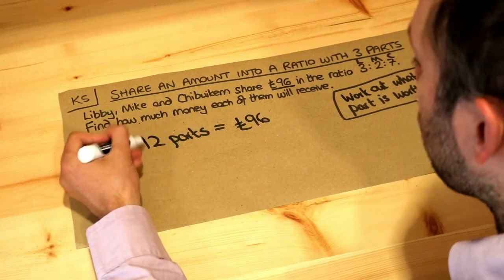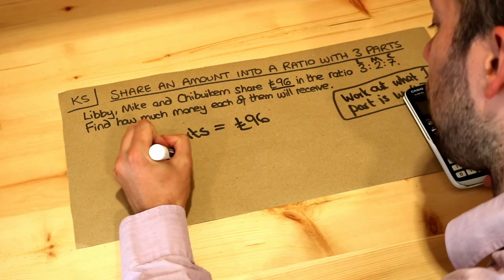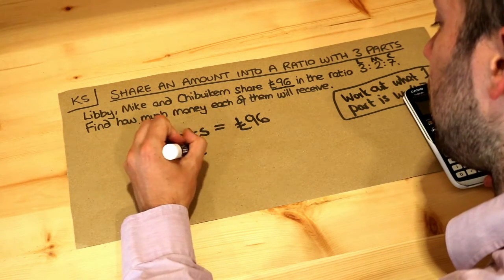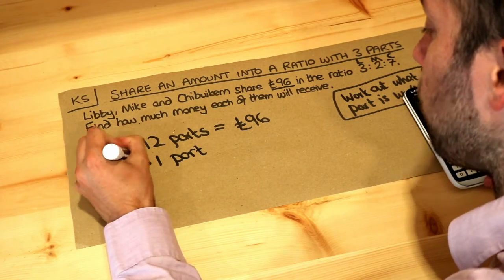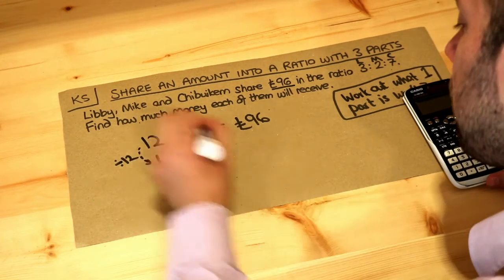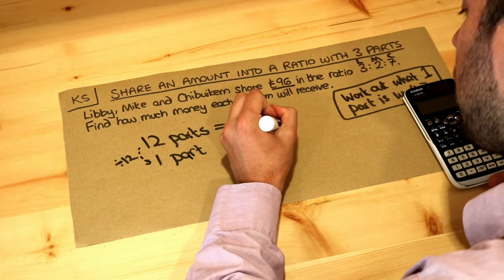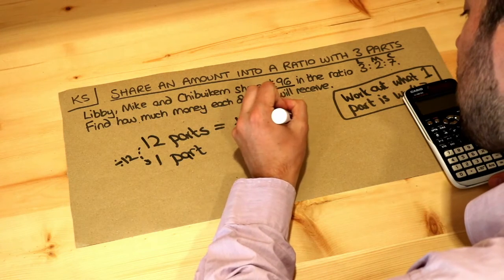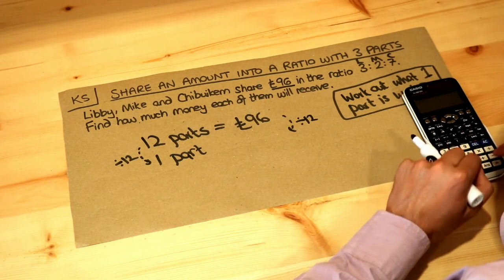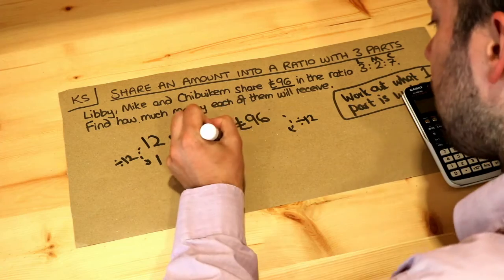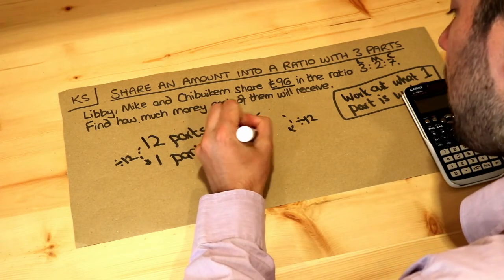Then, as per my advice, we work out what one part is worth. If 12 parts is worth £96, to get to one part we need to make it 12 times smaller. So we divide the 96 by 12, which gives us 8. So one part is worth £8.